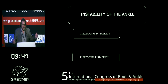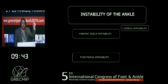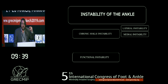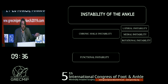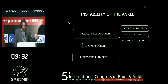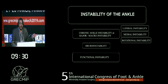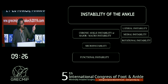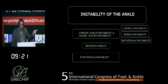From these two groups, nowadays we have chronic ankle instability, lateral instability, medial instability. We can have a combination of both. We can have rotational instability, and nowadays we have micro-instability. If we have a micro-instability, which is a mechanical instability, we also have chronic instability, which is a form of macro-instability.